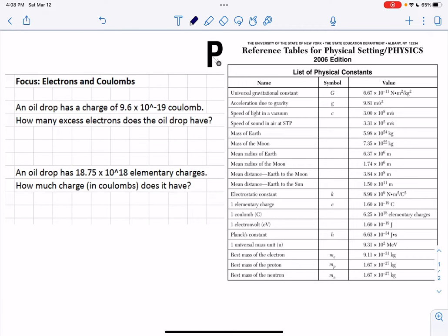Hi, I'm going to show you how to do the electrons and coulombs do now. In class, we talked about elementary charges, which we can find in the reference table right here. Elementary charges use the symbol lowercase e and stand for a value of 1.6 times 10 to the negative 19 coulombs.